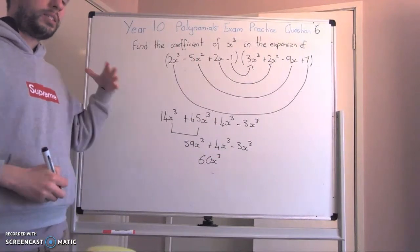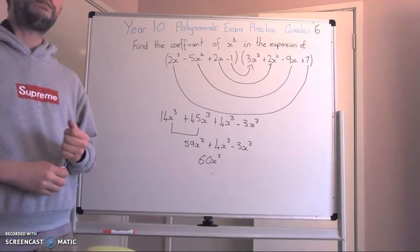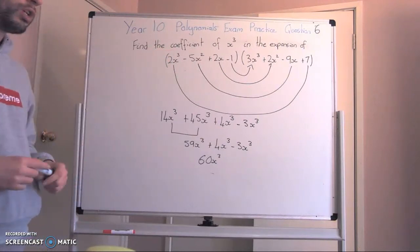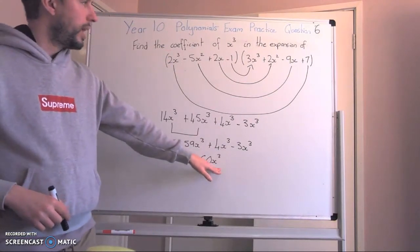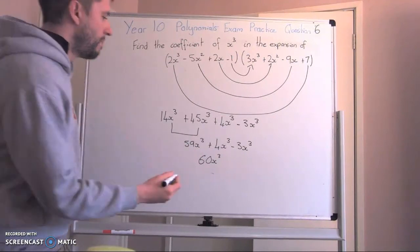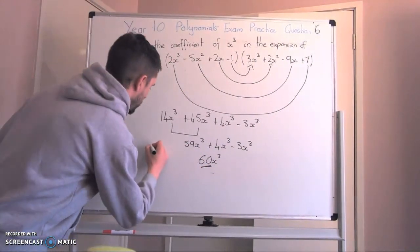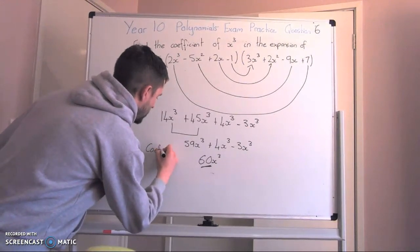So this was just a simpler version, a simpler way of solving and finding the coefficient. Now we've got x³, I am able to say that my coefficient is 60.